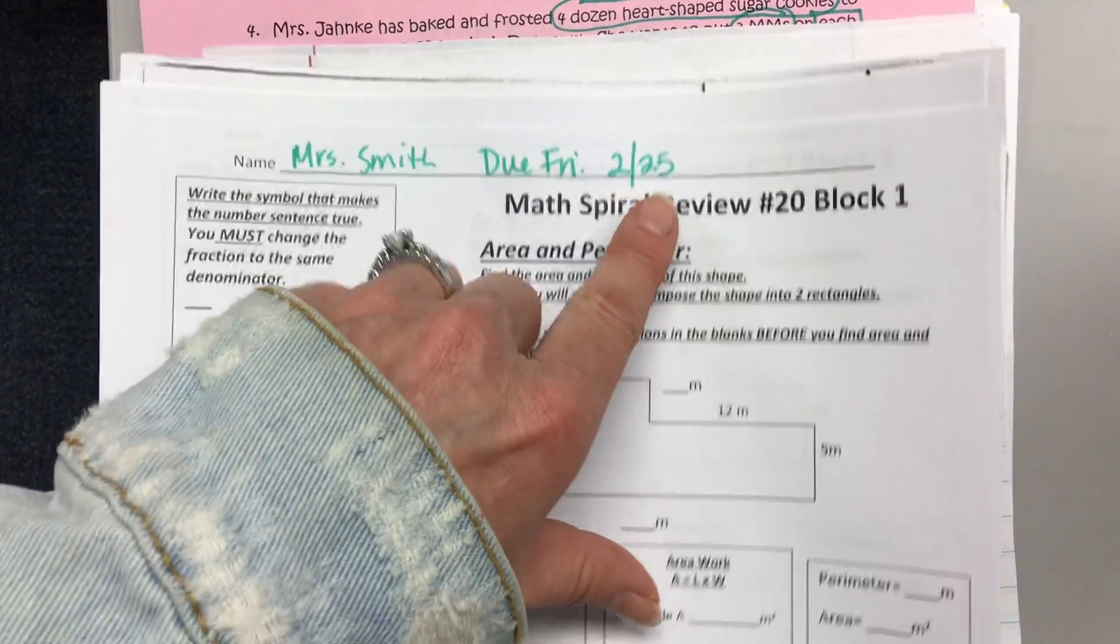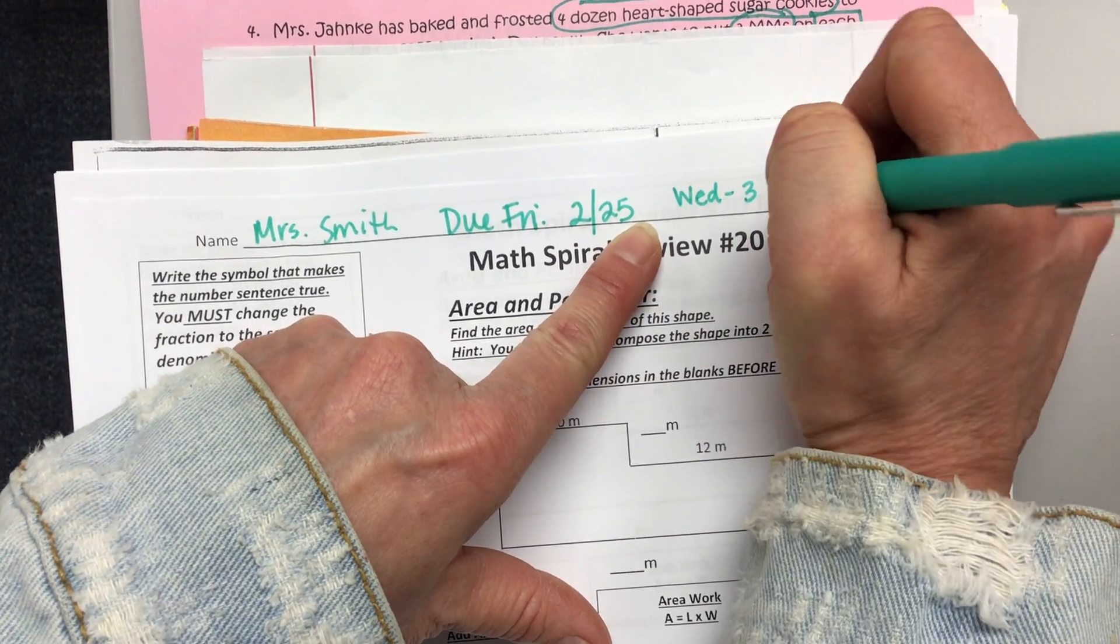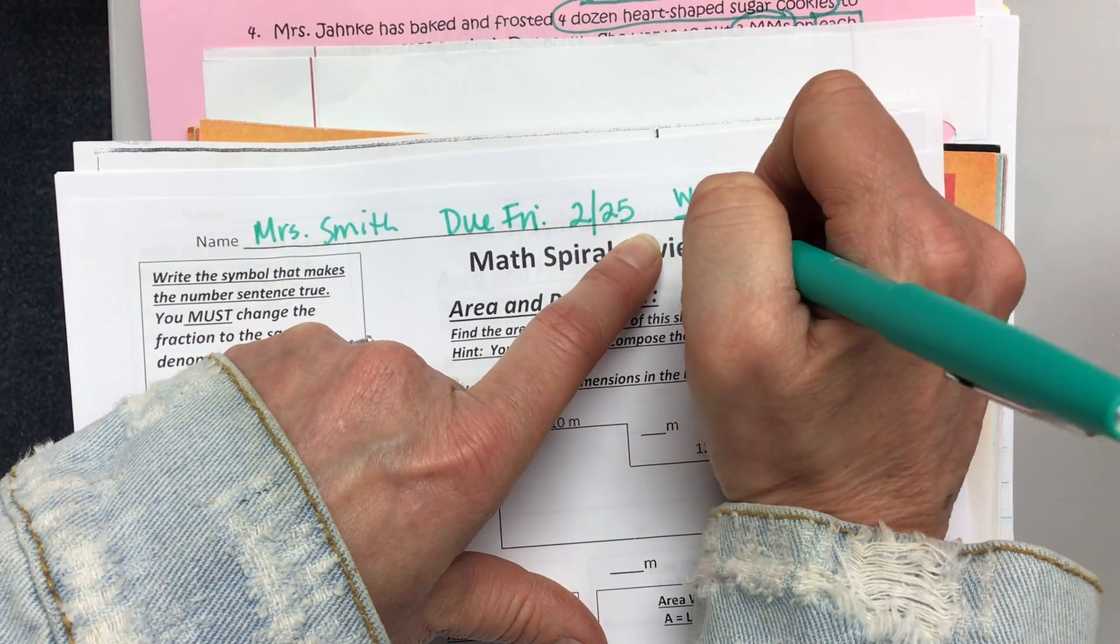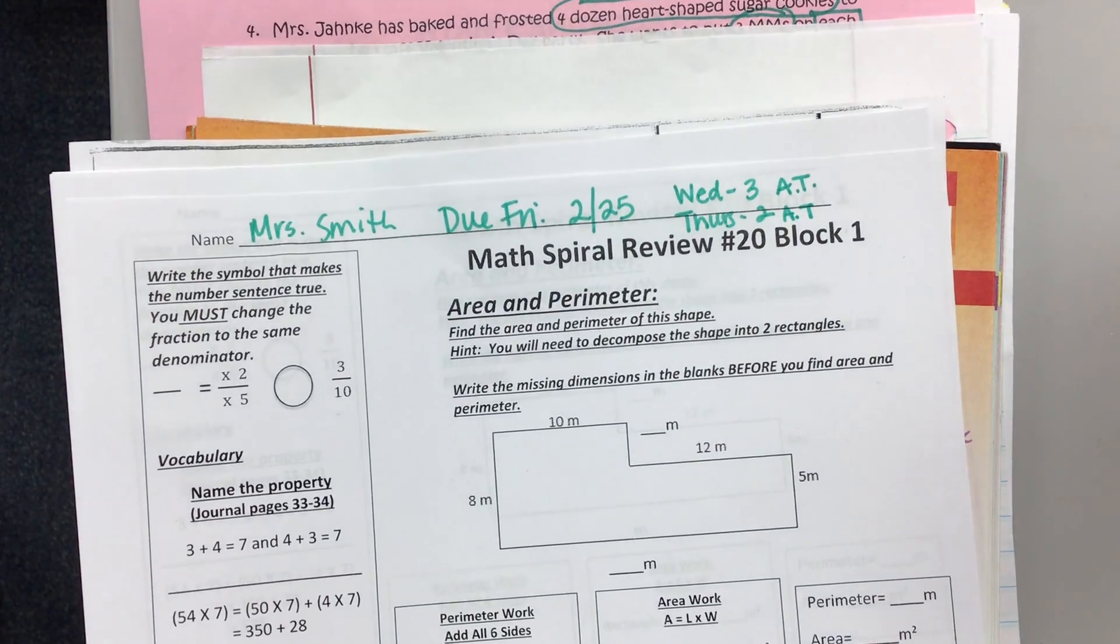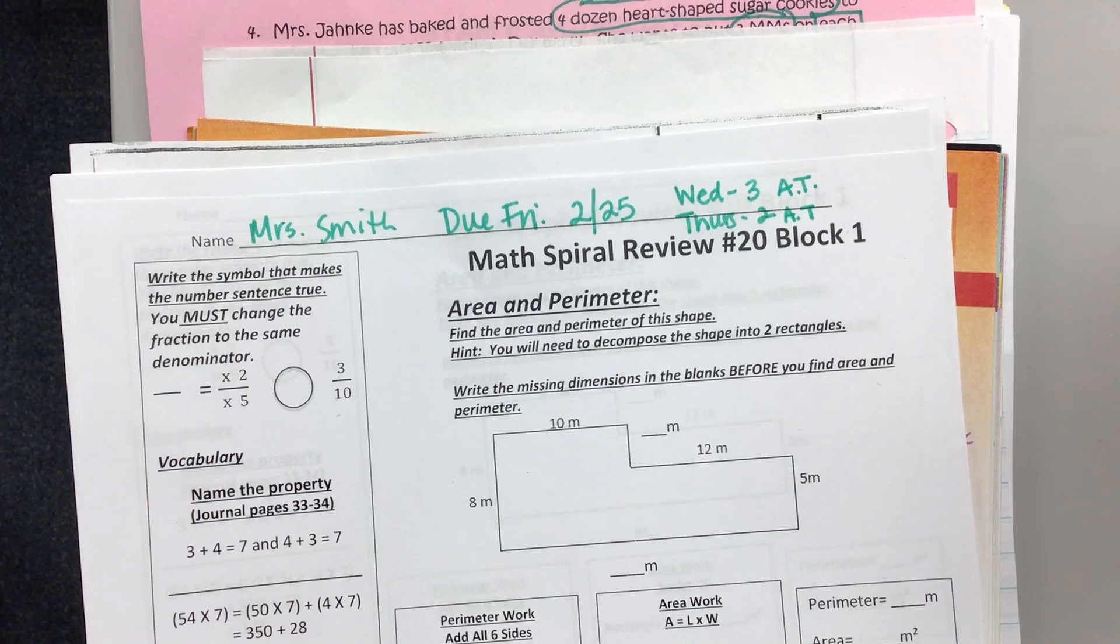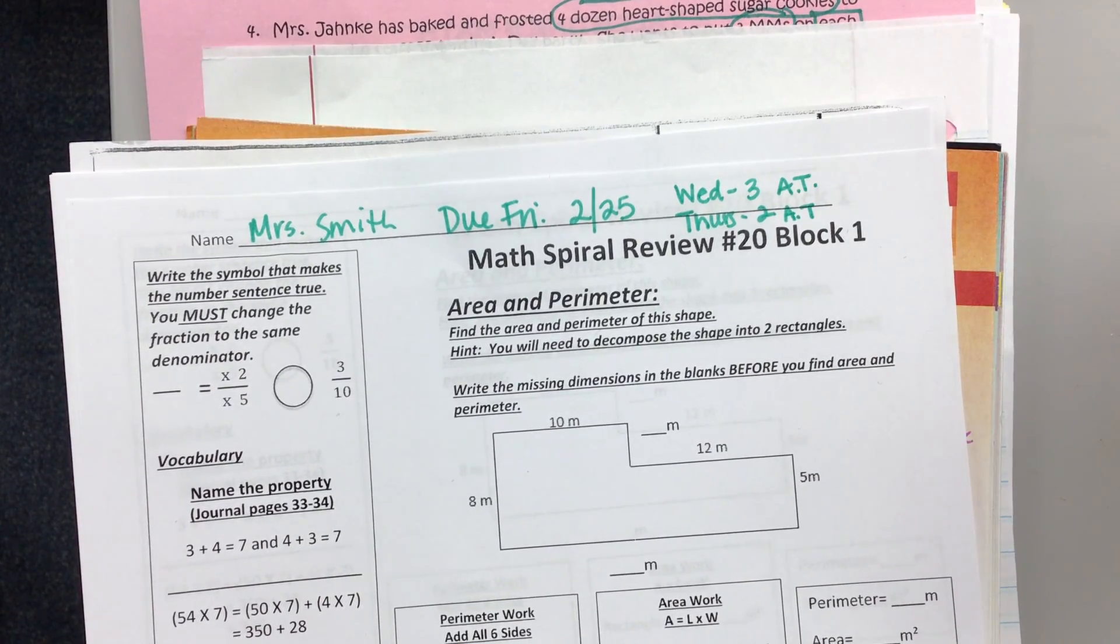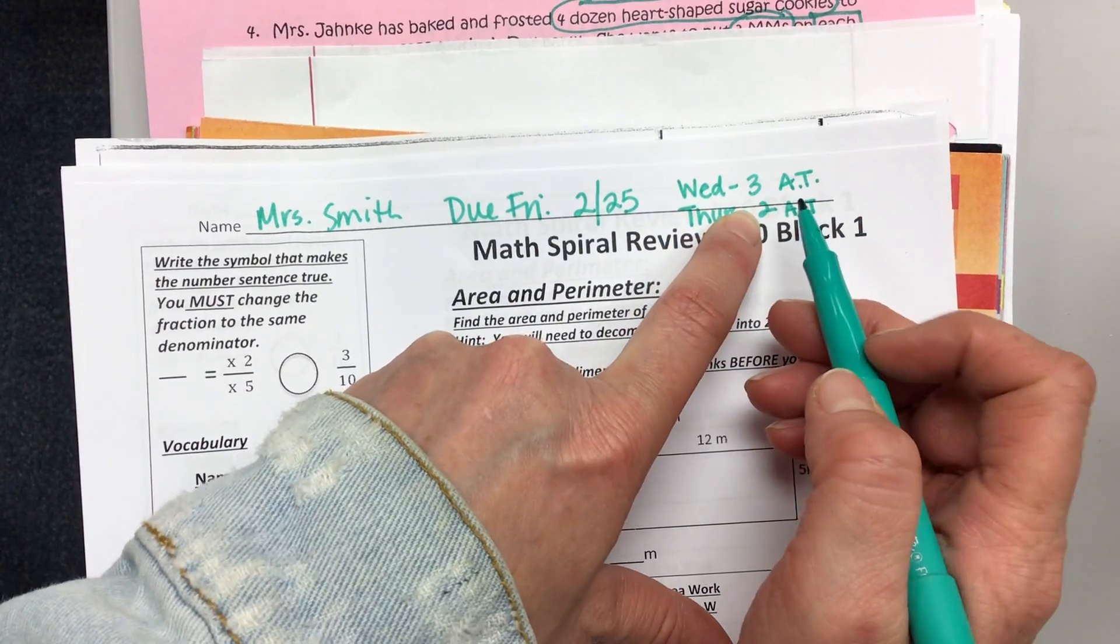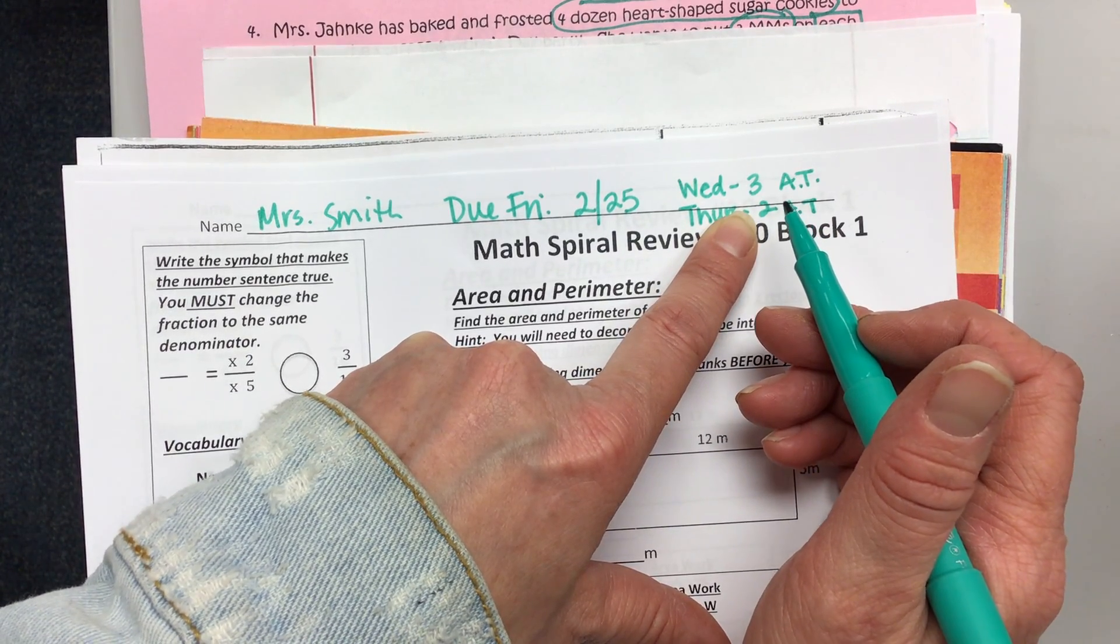Today's deal is this. If you turn it in on Wednesday for a pre-check, you will get three armor tickets. If you turn it in on Thursday for a pre-check, you will get two armor tickets. An extra armor ticket if you got 100% the first time you turned it in, and an extra armor ticket if when I graded it, you had gone back and made corrections to the spiral. So you could earn as many as four armor tickets for doing your personal best on the spiral review.